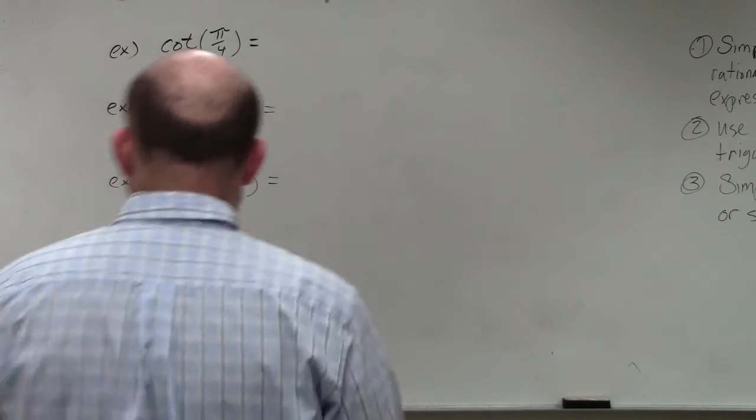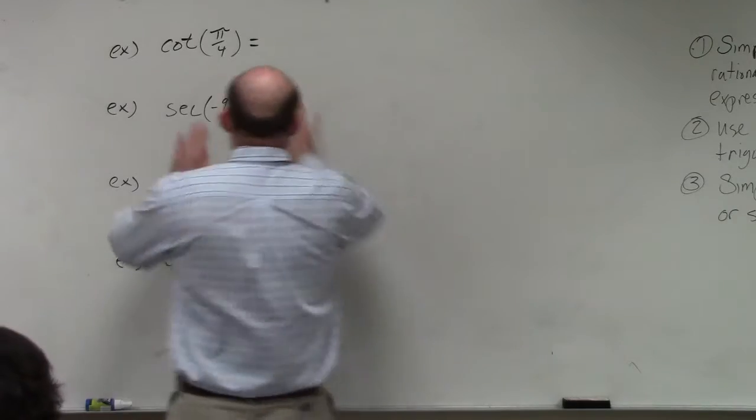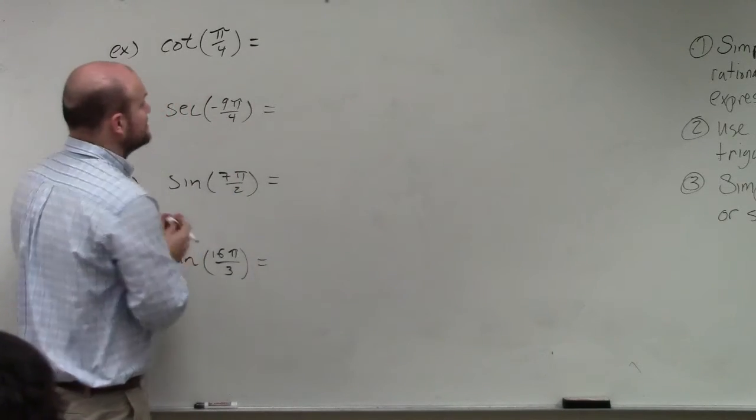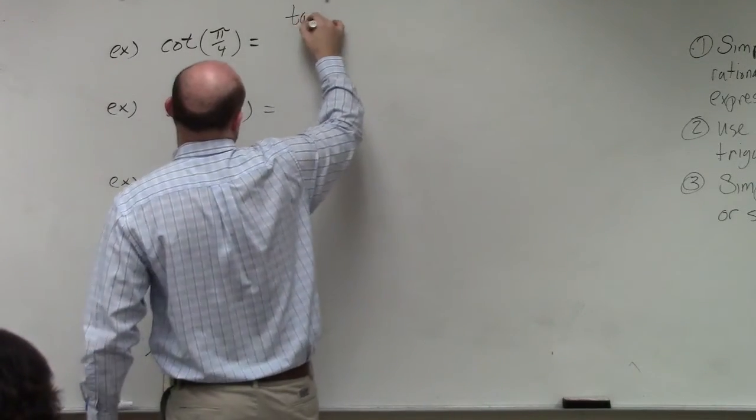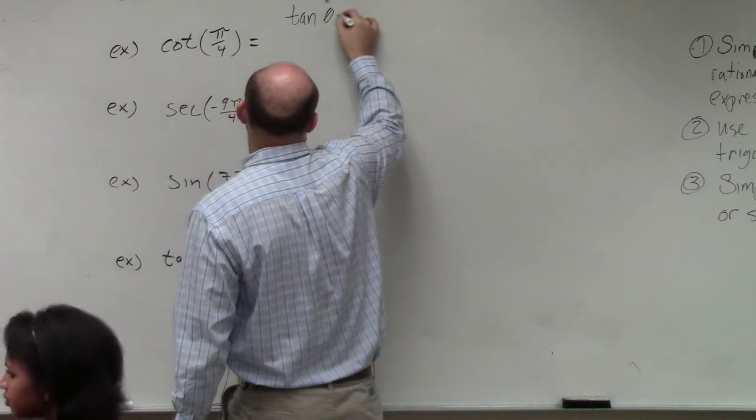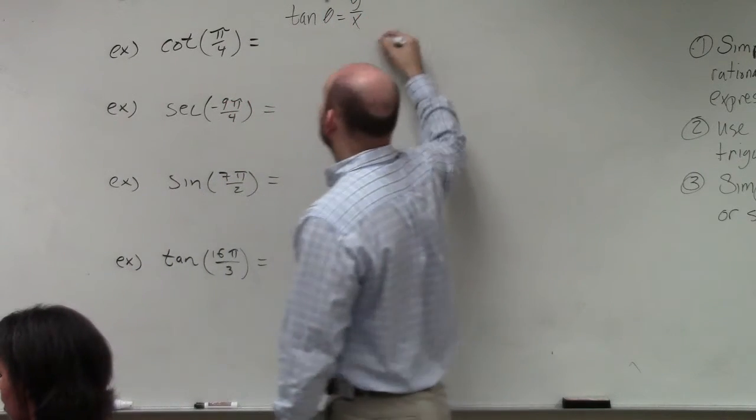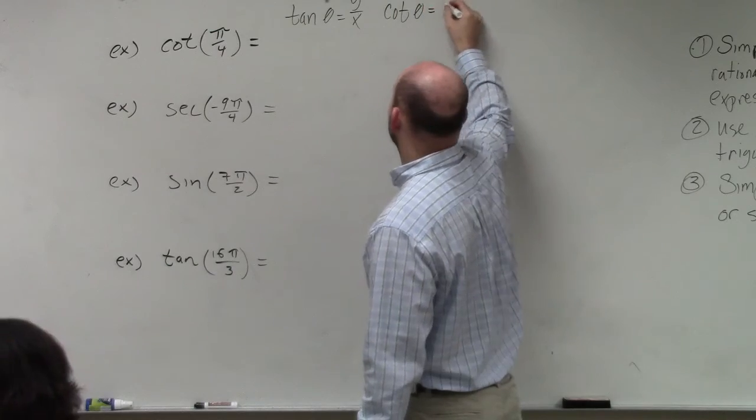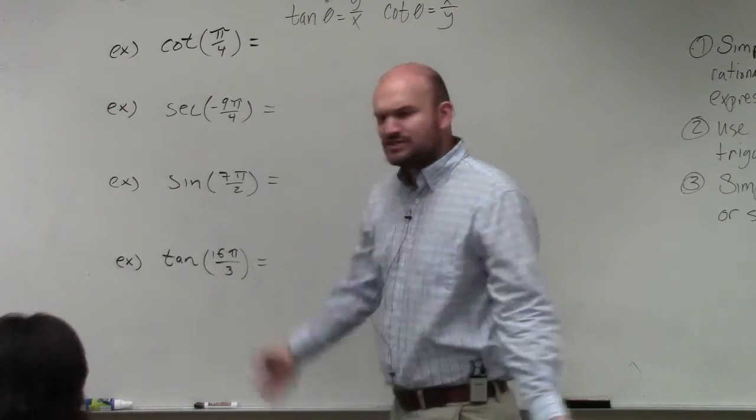So ladies and gentlemen, in the first example, cotangent of pi over 4. The first thing you need to understand is that tangent of any angle equals y over x. So the cotangent of any angle is just equal to x over y.